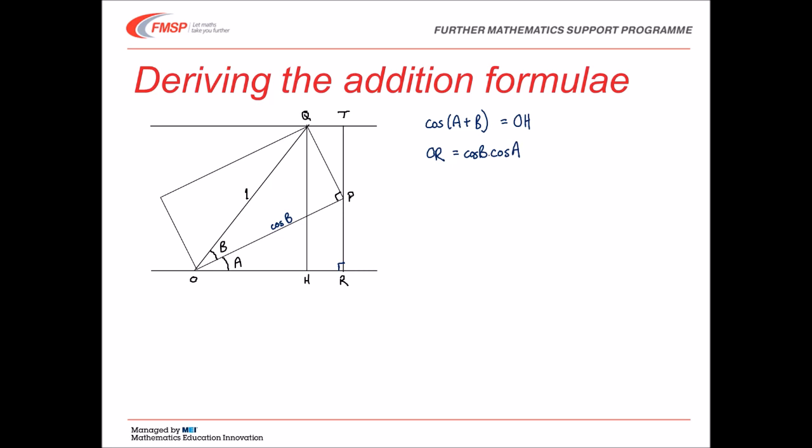Now look at QT at the top of the diagram. We're going to use triangle PTQ again. We worked out that PQ was equal to sin B, and that the angle at P was equal to A. So therefore, QT is equal to the hypotenuse sin B multiplied by sin A. If you look at the diagram, you'll see we've got plenty of right angles. So the length HR is the same as QT.